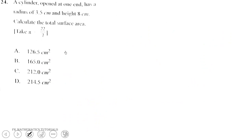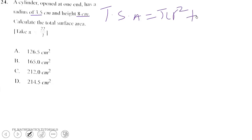A cylinder open at one end has a radius of 3.5 centimeters and a height of 8 centimeters. Calculate the total surface area. The total surface area equals the area of only one circle plus the curved surface area, which is 2πrh.